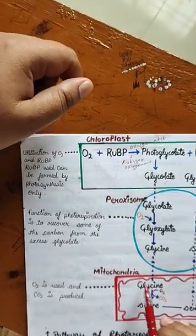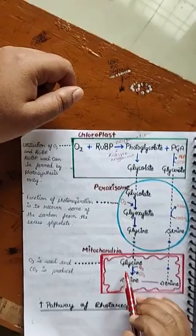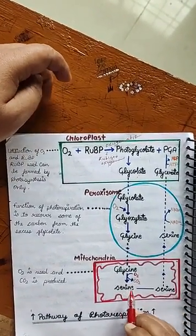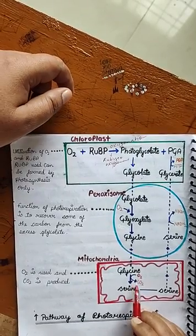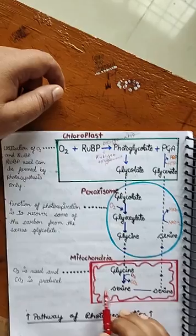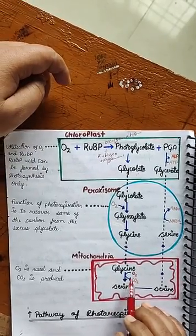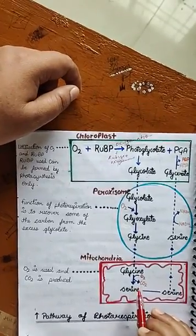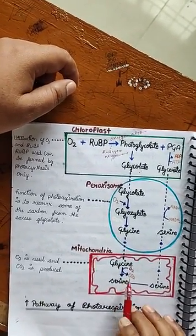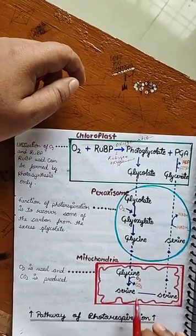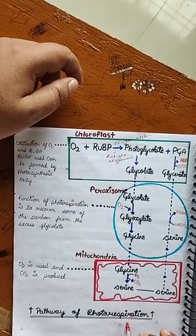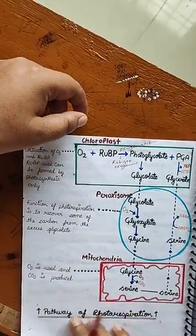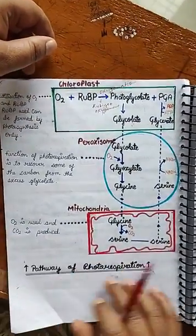So students, during the day in the presence of light, CO2 is released but oxygen is used. This process — uptake of O2 and output of CO2 — is known as photorespiration. In this way you can understand this whole phenomenon and the complete pathway.